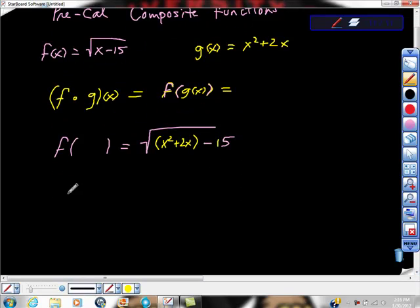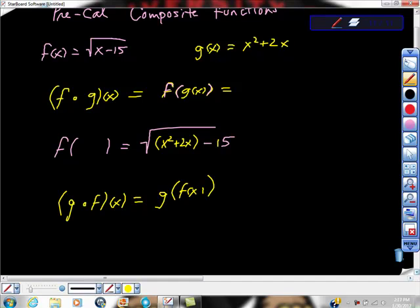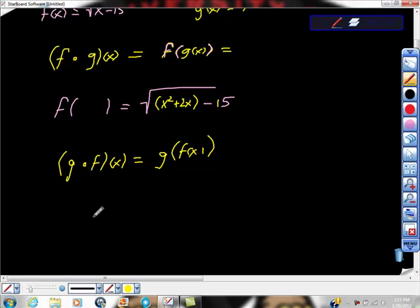And then the opposite would be true also. So if we had g of f of x, which could look like g circle f of x, knowing that it means g(f(x)), we're going to do exactly the same thing. I'm going to start with my g function, which is x squared plus 2x. Every place I find x, I'm going to put in this function.